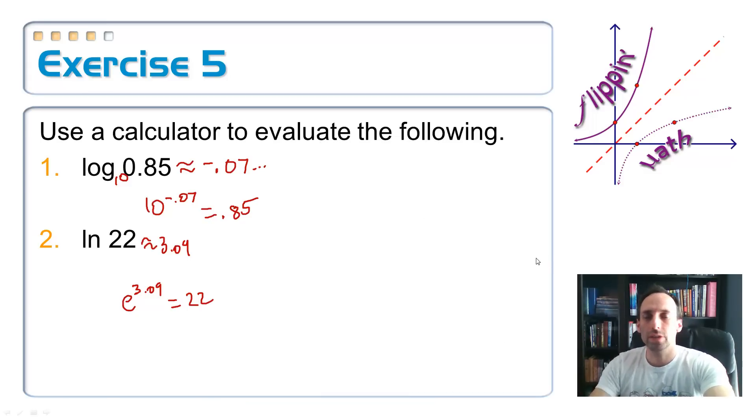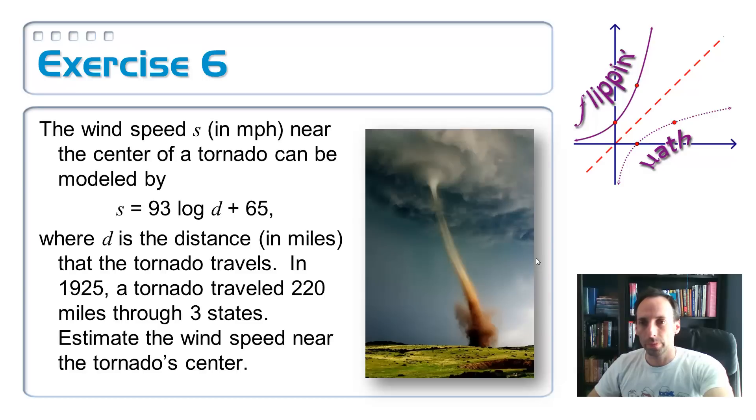So one more exercise, and it involves a tornado. So the wind speed S in miles per hour near the center of a tornado can be modeled by, right there in the middle of the equation, S is equal to 93 log of D—so that's a common log—plus 65, where D is the distance in miles that the tornado travels. In 1925, apparently, a tornado traveled 220 miles across three states. So we want to estimate the wind speed near the center of that tornado.